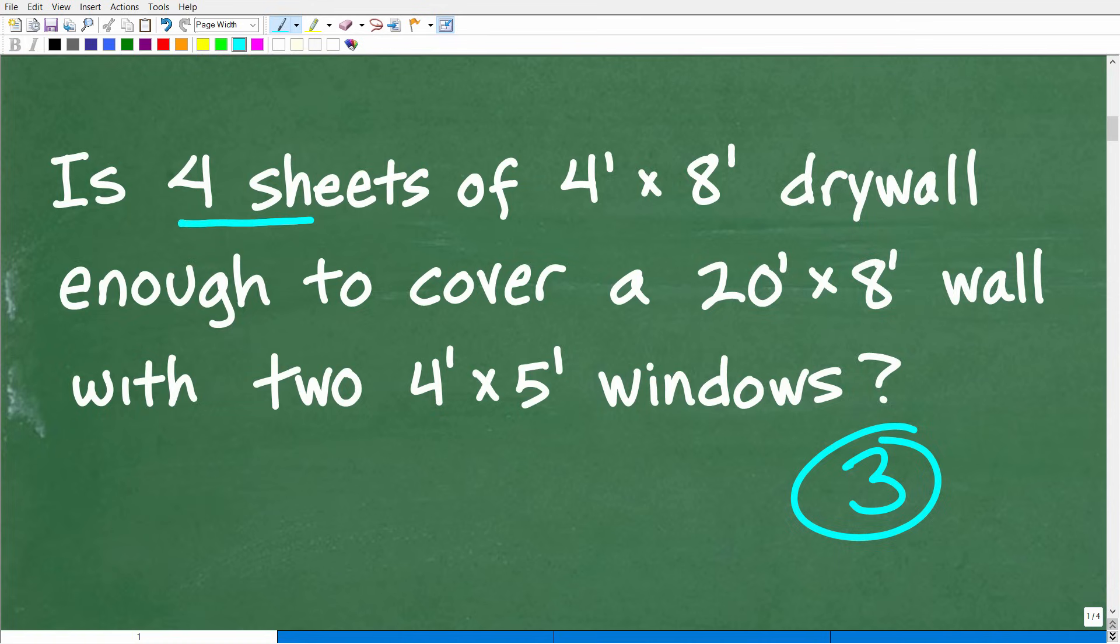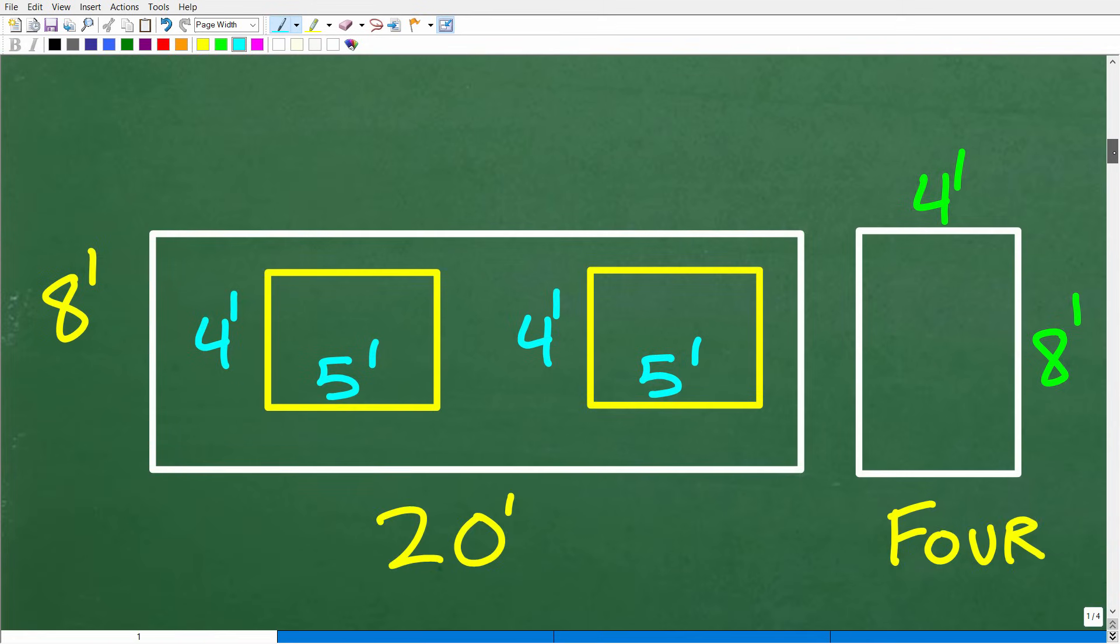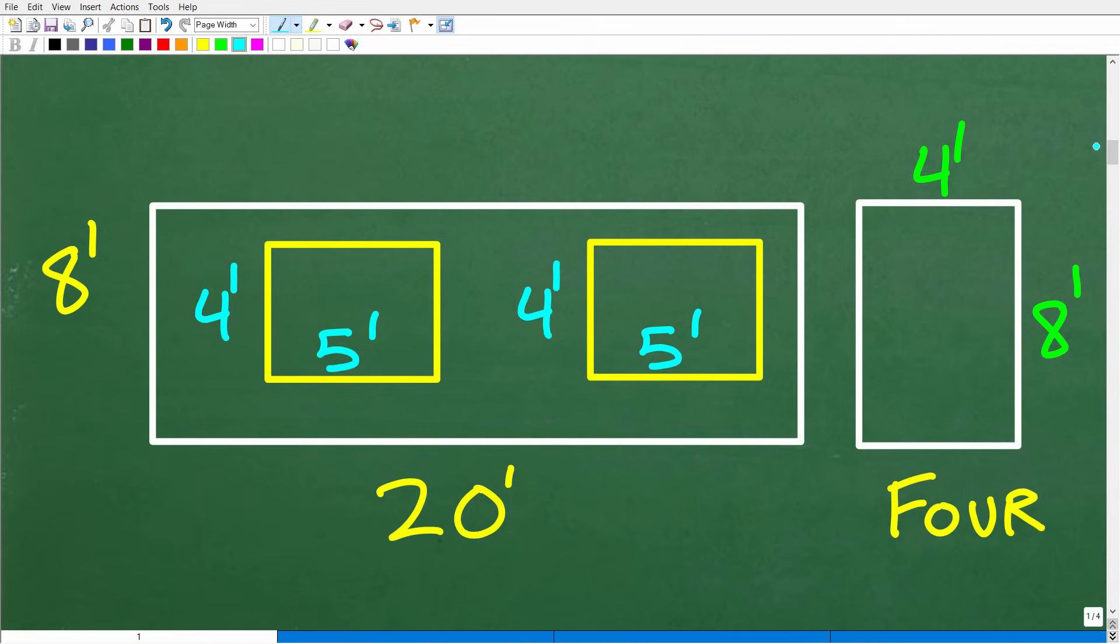Of course, we have this amount of material, four sheets, four foot by eight foot drywall. Okay, that's what we have. And we want to know, is this enough to cover this wall with these two windows? So let's go ahead and take a look at a simple model or sketch to visualize the problem. Okay, so here is my lovely wall. Now, it's an eight foot by 20 foot long wall, but it has these two windows right here, four feet by five foot windows.